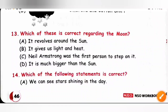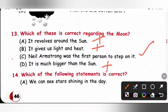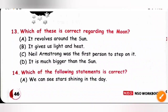Question 13: Which of these is correct regarding the moon? Option A — it revolves around the sun: incorrect, the moon revolves around the earth. Option B — it gives us light and heat: incorrect, it reflects the sun's light. Option C — Neil Armstrong was the first man to step on it: correct. Option D — it is much bigger than the sun: incorrect, the moon is much smaller than the sun. So option C is the correct answer.